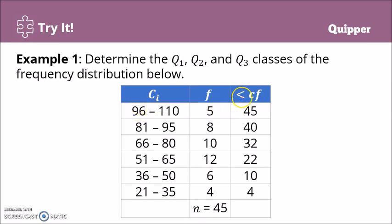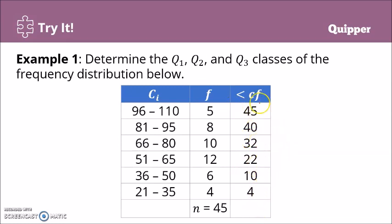So we have the less than cumulative frequency. We can start from the top: the total frequency is 45. Then 45 minus 5 gives 40, minus 8 gives 32, minus 10 gives 22, minus 12 gives 10, minus 6 gives 4. Or we can start from the bottom: 4, plus 6 is 10, plus 12 is 22, plus 10 is 32, plus 8 is 40, plus 5 is 45. Either way, from top to bottom it should be decreasing — that's the less than cumulative frequency.